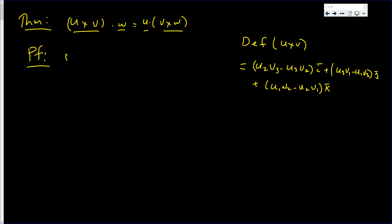So u cross v dot w on the left. On the right I have the definition of u cross v, which is u2 v3 minus u3 v2 in the i direction, plus u3 v1 minus u1